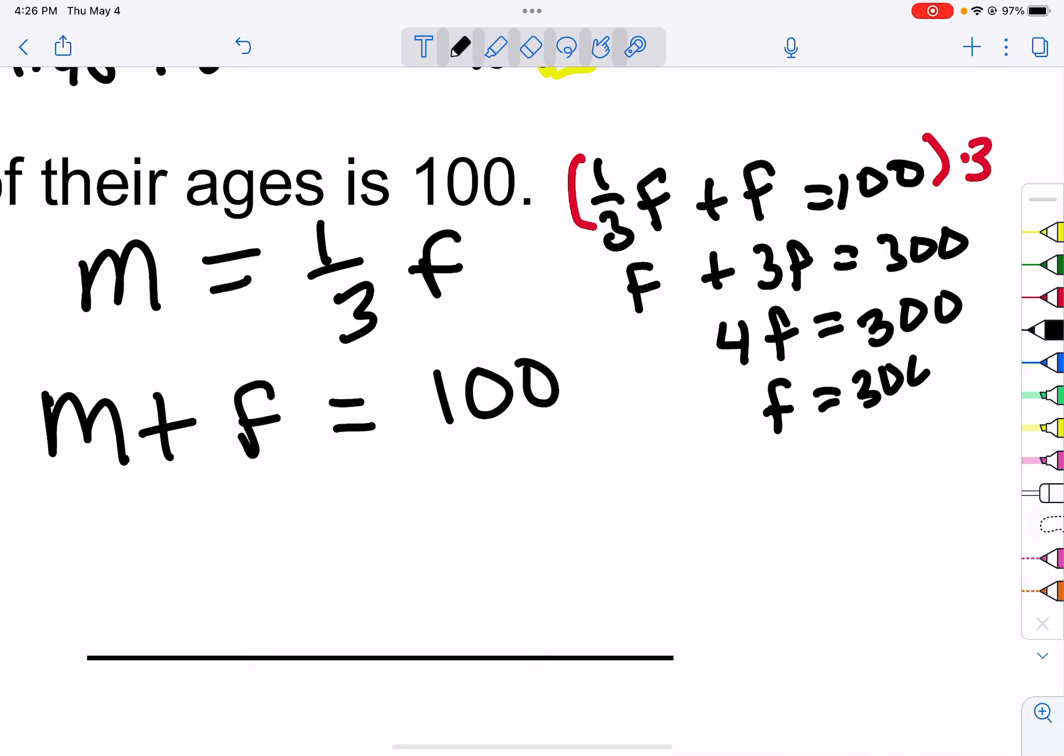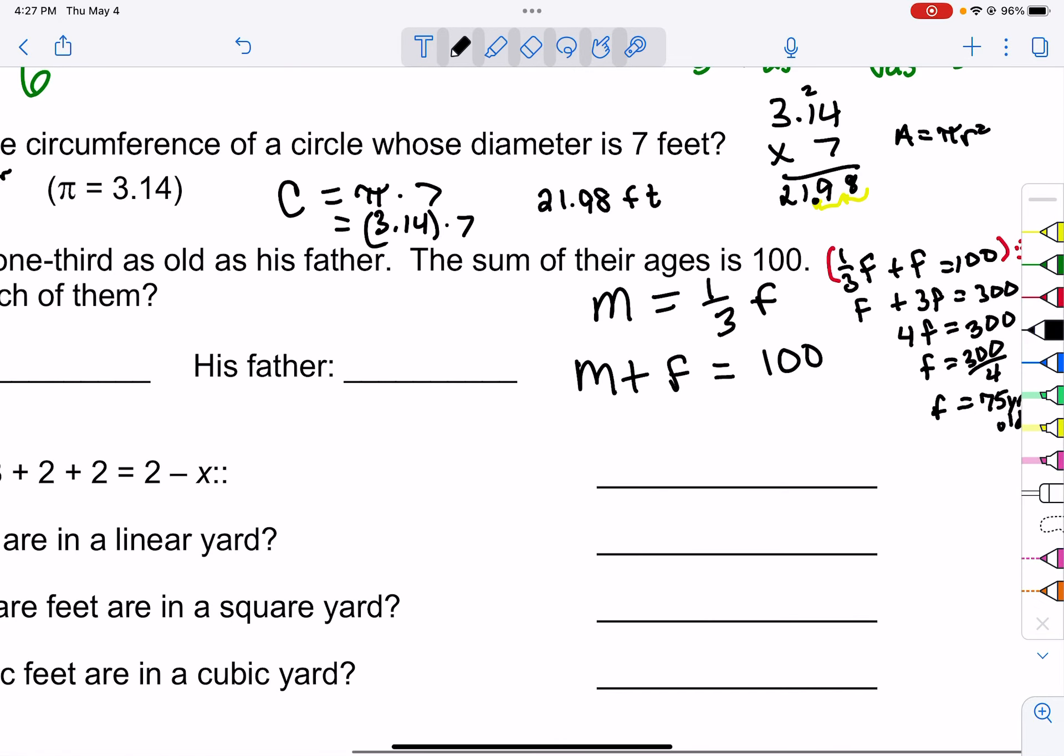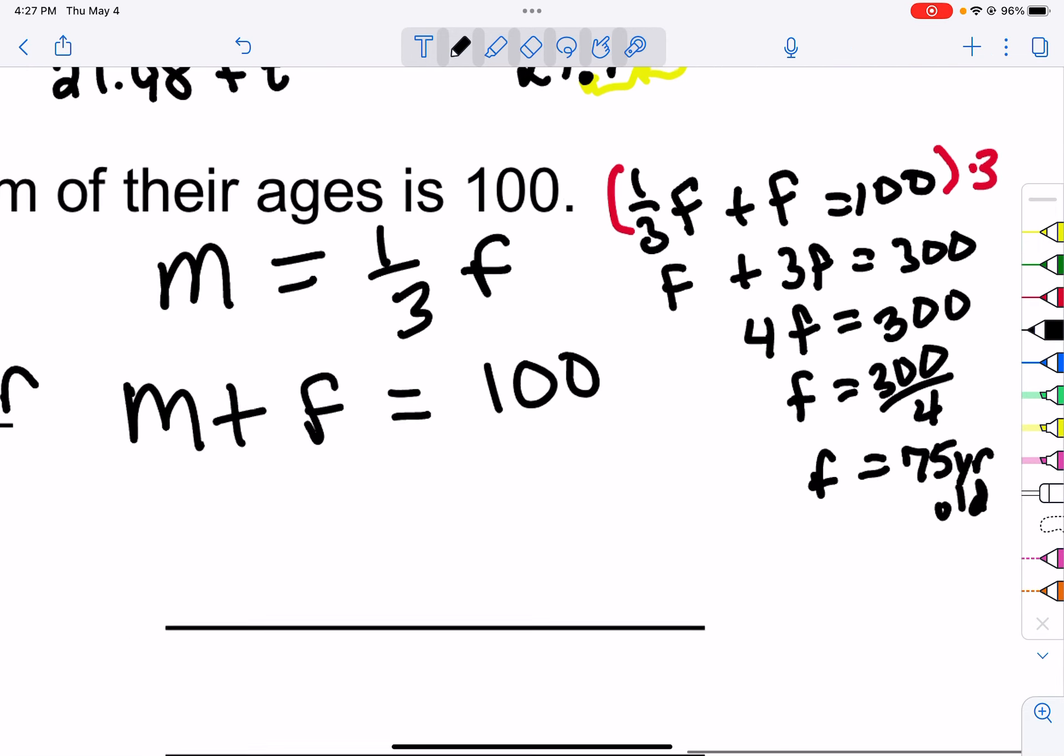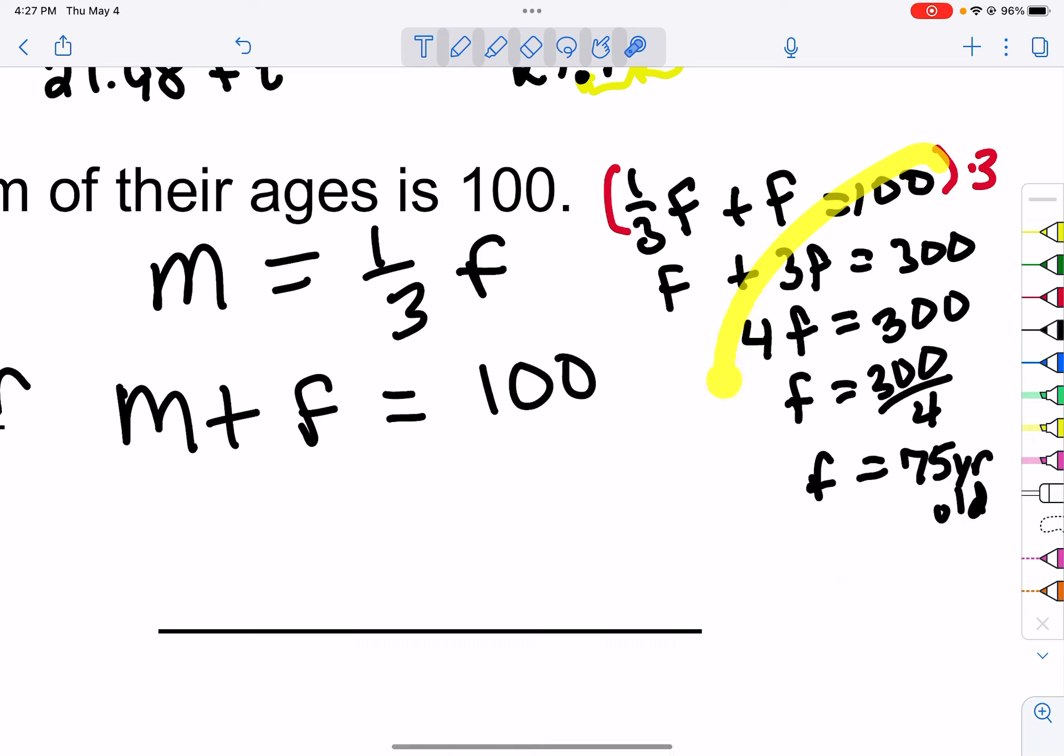So f is 300 divided by four, so the father is 75 years old. Now here you can check your work. If the father is 75 years old, then the son is a third of that, or 25, and do they add up to 100? Yes.